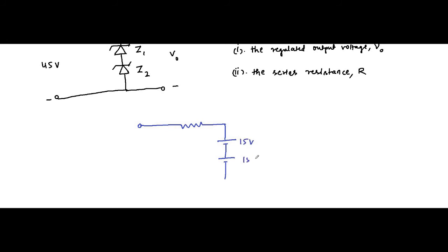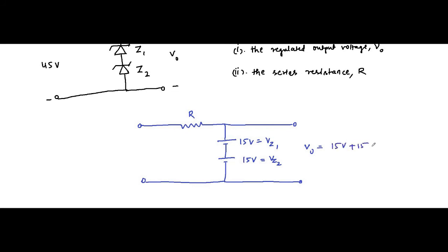The equivalent circuit has Vz1 equal to 15 volt and Vz2 equal to 15 volt, along with series resistance R. The output voltage is simply 15 volt plus 15 volt, which is equal to 30 volt — that is Vz1 plus Vz2. The current rating for both diodes is the same, 200 milliampere. The input voltage is 45 volt, so applying KVL in this loop: 45 minus 200 milliampere times R minus 30 equals zero.